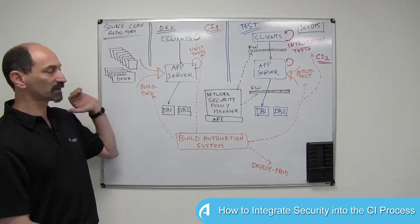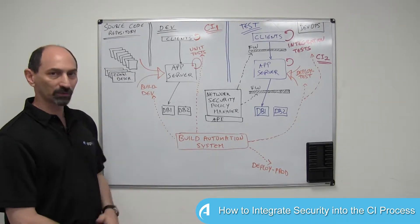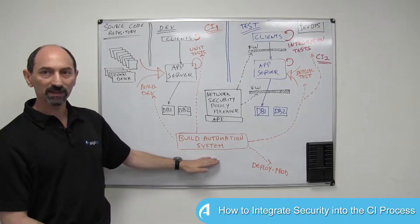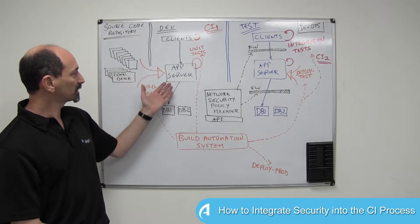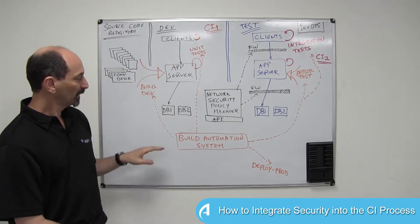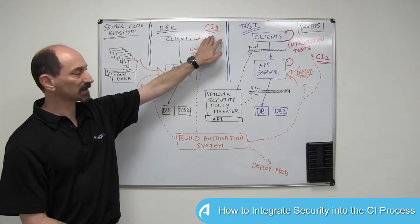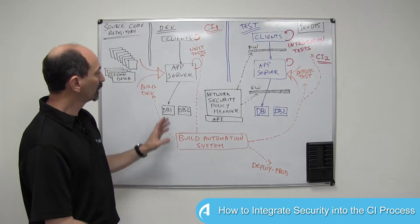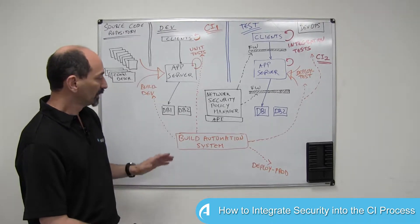You have developers writing source code. Whenever they're finished with a piece of code, they commit it to the source code repository, and then the build automation system kicks in. The build automation system takes the source and creates an application server, deploys the code to the application server, and then it activates the first round of integration tests, which are typically unit tests that can happen within an hour to test whether the new functionality is doing what it's supposed to.